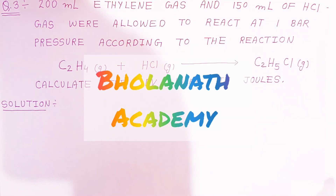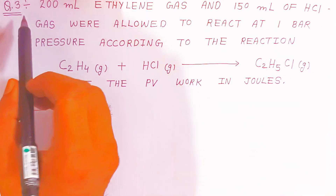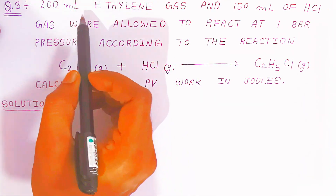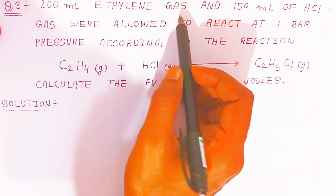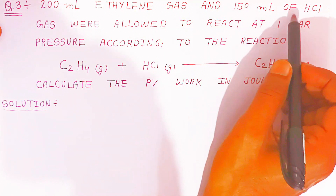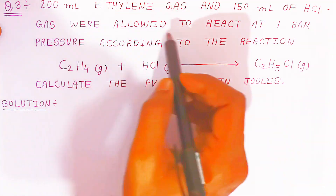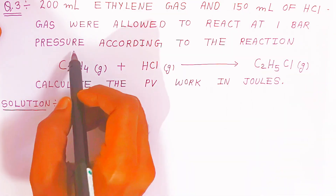Hello students, once again welcome to Bholanath Academy. In this video we are going to see question number three. In question number three, you have 200 milliliter ethylene gas and 150 milliliter of SCl gas which were allowed to react at one bar pressure.